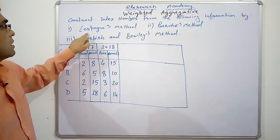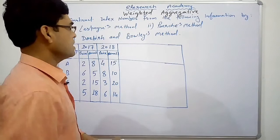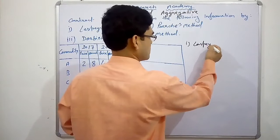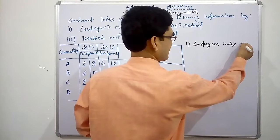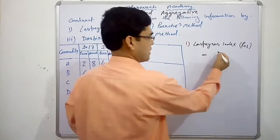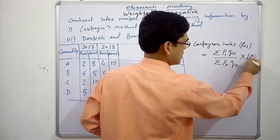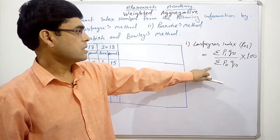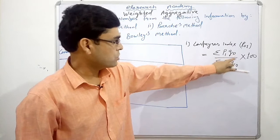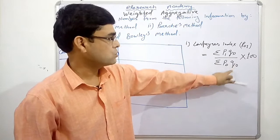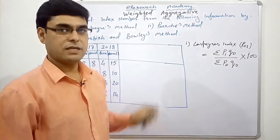We will first solve or construct the index number by Laspier's method. Under the Laspier's method we need a formula first that is Laspier's index or price index: P01 equal to sigma P1 Q0 upon sigma P0 Q0 into 100. So this is the formula under Laspier's method. We need summation of P1 multiplied by Q0 upon summation of P0 multiplied by Q0. So these two columns we need to get the answer or index number by Laspier's method.